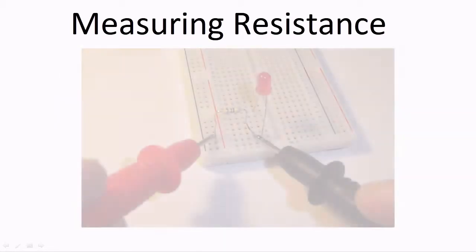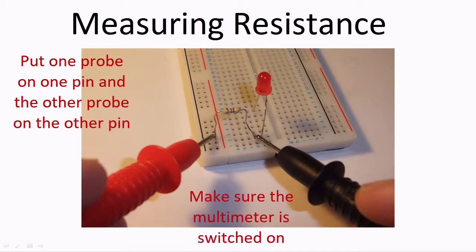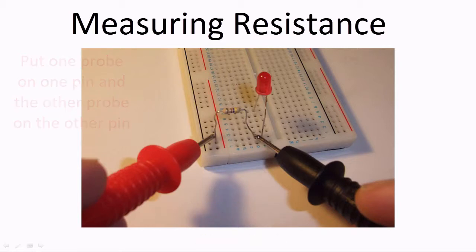Now, with the multimeter switched on, put one of the multimeter's probes on one side of the resistor, and the other probe on the other side of the resistor. It doesn't matter which probe you use on which side of the resistor.